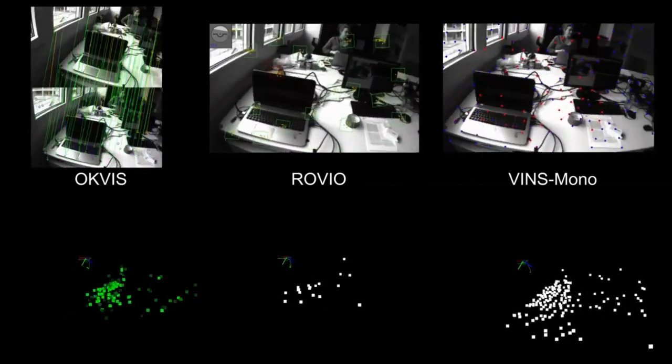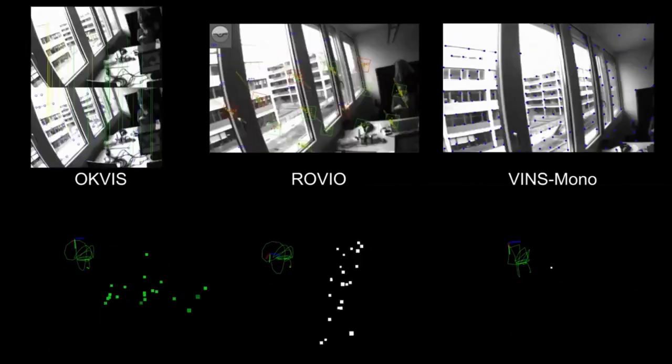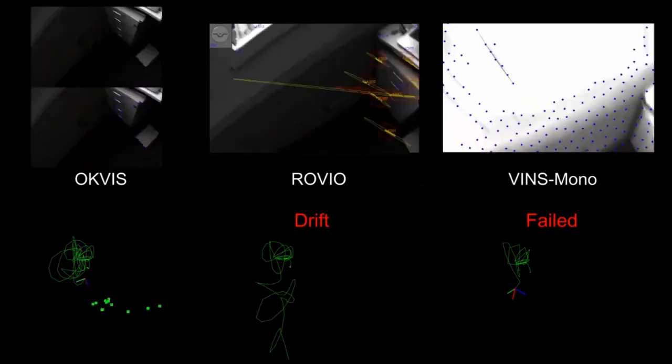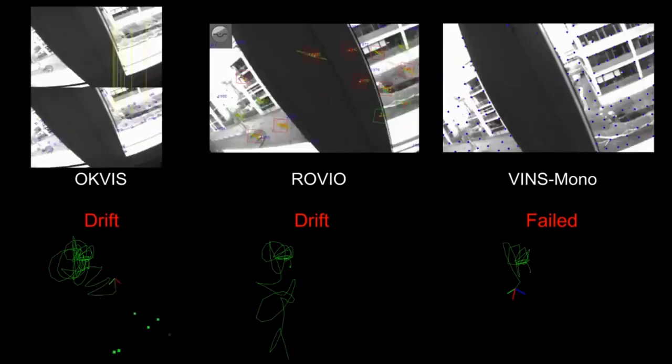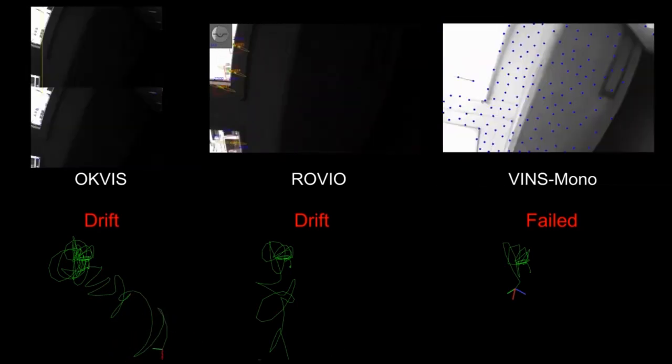Today, visual inertial odometry systems still fail in high-speed and high dynamic range scenes. In this example, the camera was shaken fast in an office. Because of motion blur and strong light changes in the scene, no state-of-the-art visual inertial system is able to track the camera accurately.